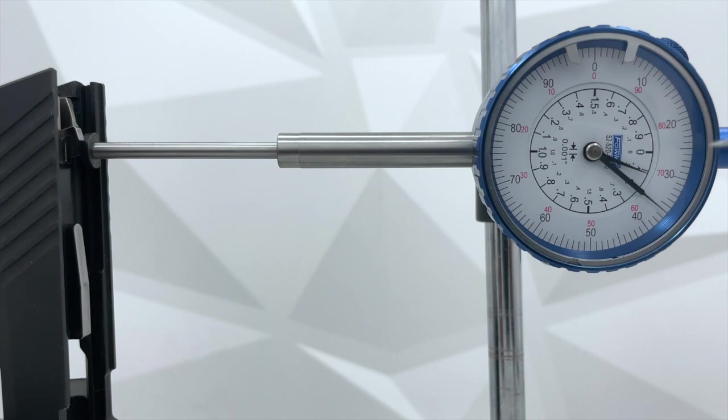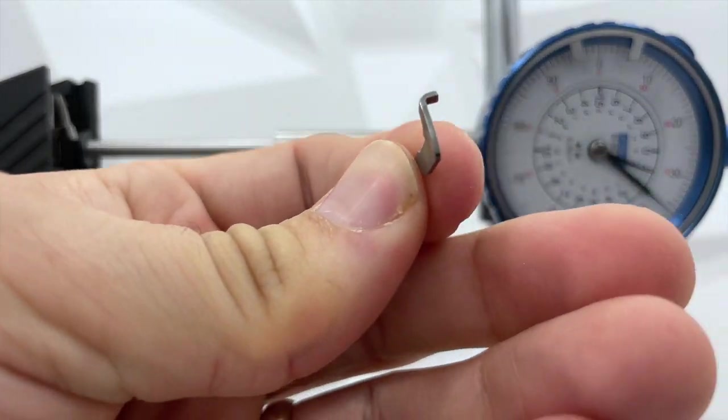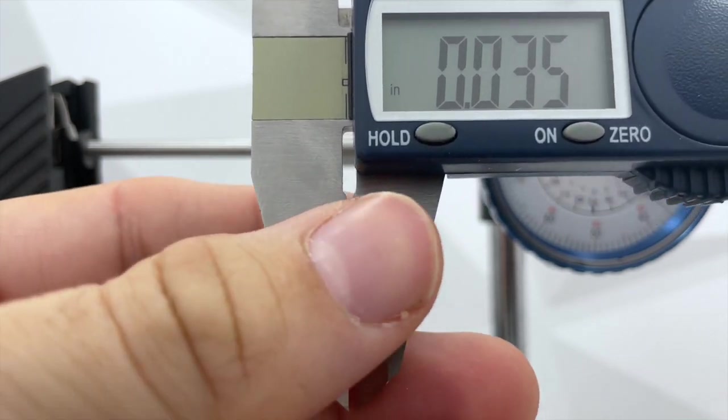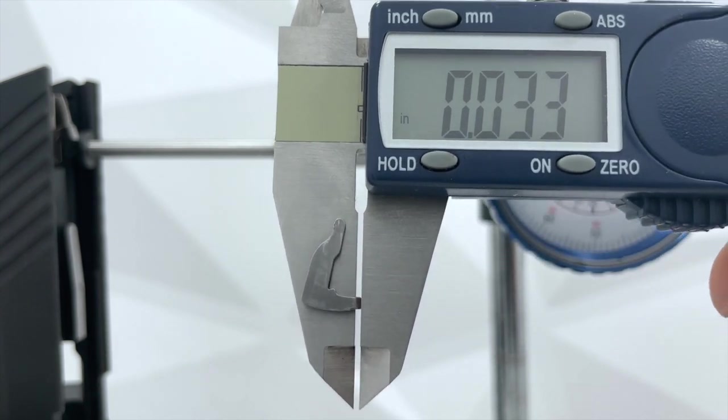So there's a difference of three thousandths of an inch. And I'm actually curious now what the dimensions of the safety lever itself is. So let's take a reading of the body here. And that is 0.035. Let's do a reading on the tab as well. 0.033.